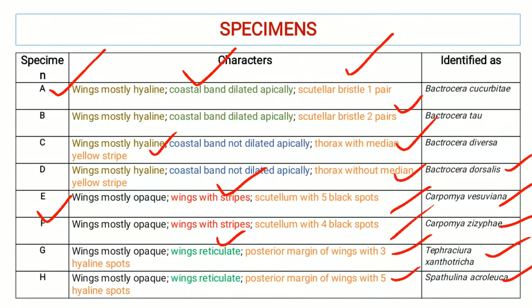To summarize, you need to first arrange the characteristics in the form of pairs, and then you can make a dichotomous key of the specimens you have. Arranging the characteristics first makes it easier to build the key. In the next video, we will discuss the different types of dichotomous keys following the same example of fruit fly specimens.